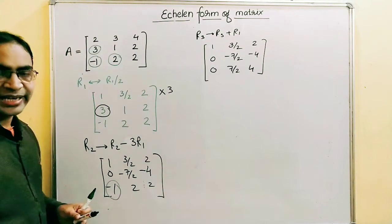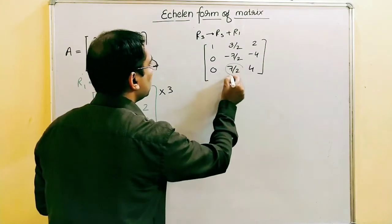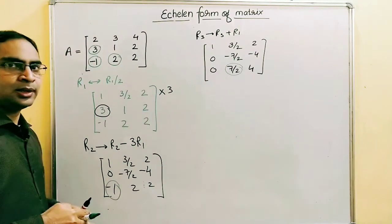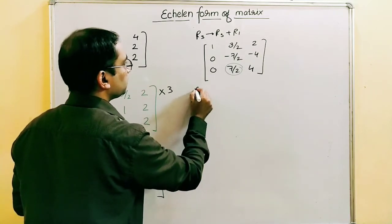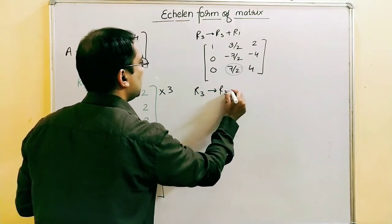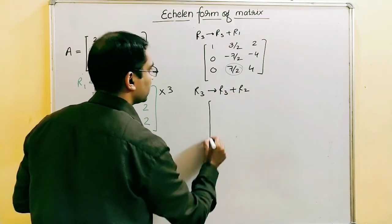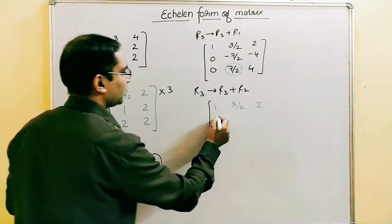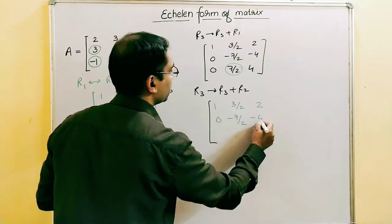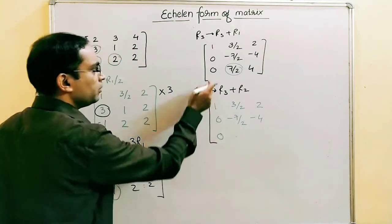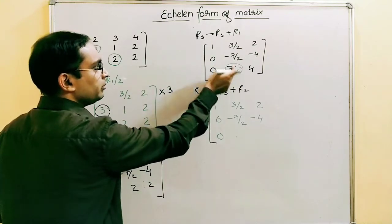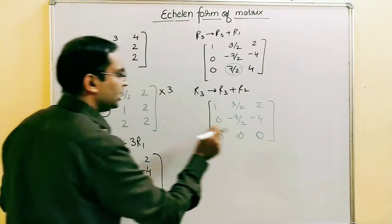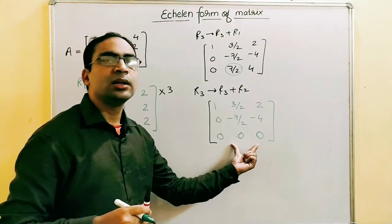Now shifting to the second column, we need to convert the element in row three to zero. Since it is in the second column, we operate with the second row. The operation is R3 → R3 + R2. Row one stays [1, 3/2, 2] and row two stays [0, −7/2, −4]. For row three: 0 + 0 = 0; 7/2 − 7/2 = 0; 4 − 4 = 0. So the third row becomes a zero row and we have converted the matrix into upper triangular form.